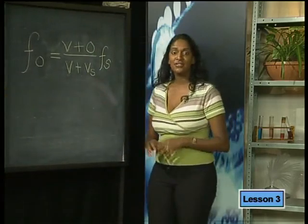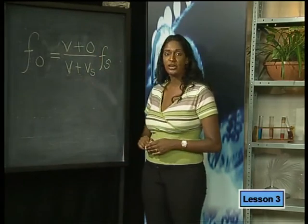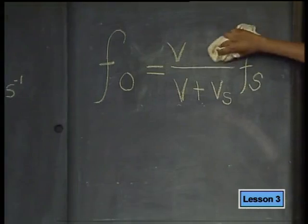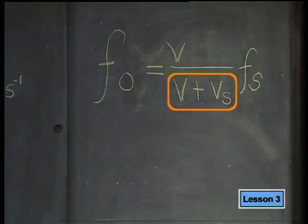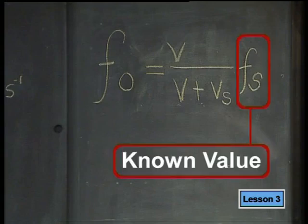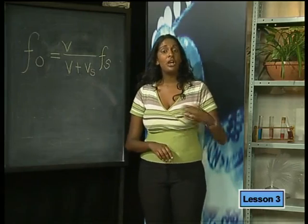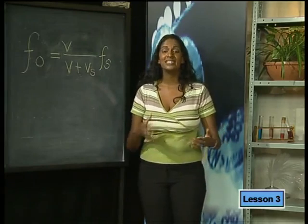If we substitute the value of V_O equal to zero into our Doppler equation, then the denominator of the fraction is larger than the numerator. So we will be multiplying the source frequency by a number that is less than one. Remember, the frequency of the source — the moving blood cells — is the same as the transmitter, which we know. This tells us that the observed frequency will be lower than the frequency of the sound waves at the source.